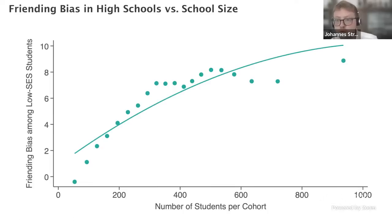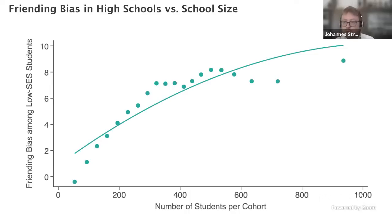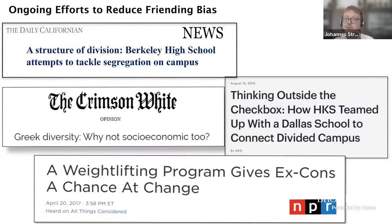One pattern we document is school size: larger schools seem to lend themselves to substantially more friending bias than smaller schools. When you have very small groups, it's hard for cliques to form because everyone has to interact with everyone, but in larger groups it becomes easier for cliques of similar people to form. We also talk about academic tracking within schools, the structural design and architecture of schools, and the extent of Greek life as important determinants of friending bias within colleges.